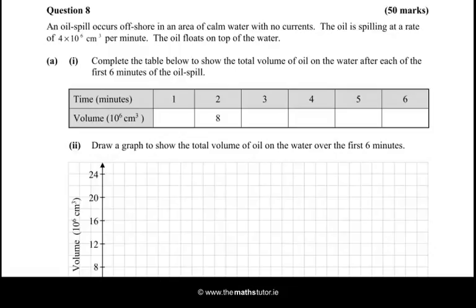First we're told that an oil spill occurs offshore in an area of calm water with no currents. The oil is spilling at a rate of 4 by 10 to the power 6 cm³ per minute. Because it's cm³ per minute we know that this is a rate of volume changing with respect to time. We can safely say that dV/dt is equal to 4 by 10 to the power 6, and the unit is very important — we're dealing in cm³ here, which means it's volume.